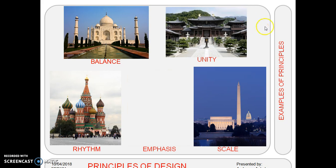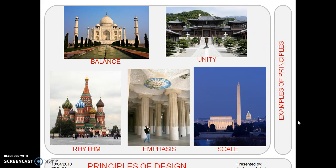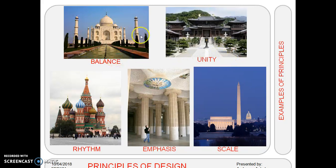Here are some examples from different buildings around the world. The example of balance: the Taj Mahal — you can see the balance of the minarets and the main structure. Second is unity: you can see the composition of different types of pagodas.